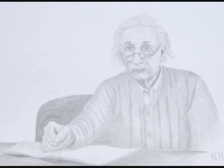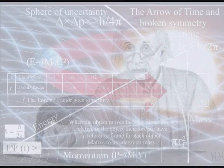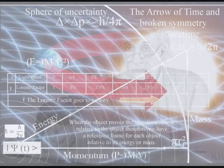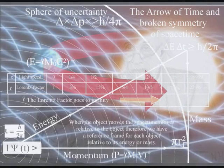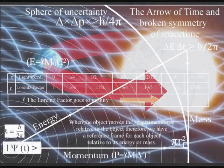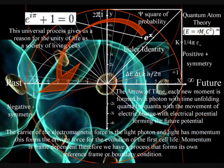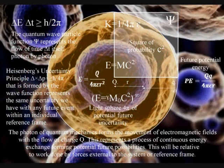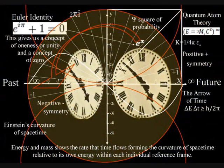This is possible because in Einstein's relativity every object has its own reference frame. When the object moves, space-time moves relative to the energy, mass, and momentum of the object. Therefore every object is always at the centre of their own created reference frame. This is a universal process, from the largest planet spinning around a star to the smallest living cells. Everything forms its own reference frame by slowing down the rate that time flows, relative to its own energy, mass, and momentum.